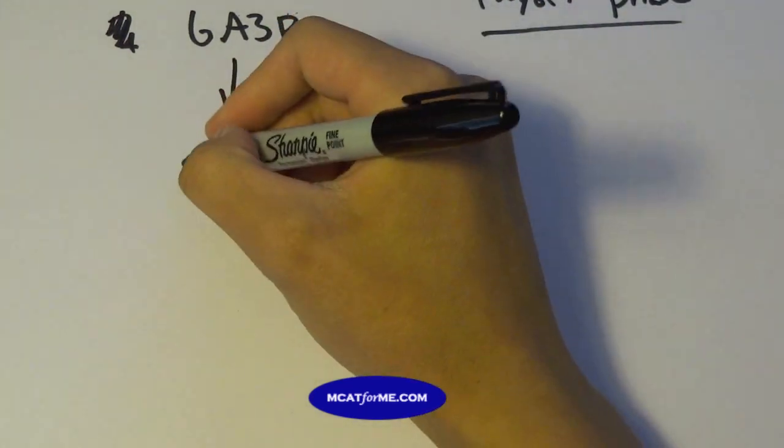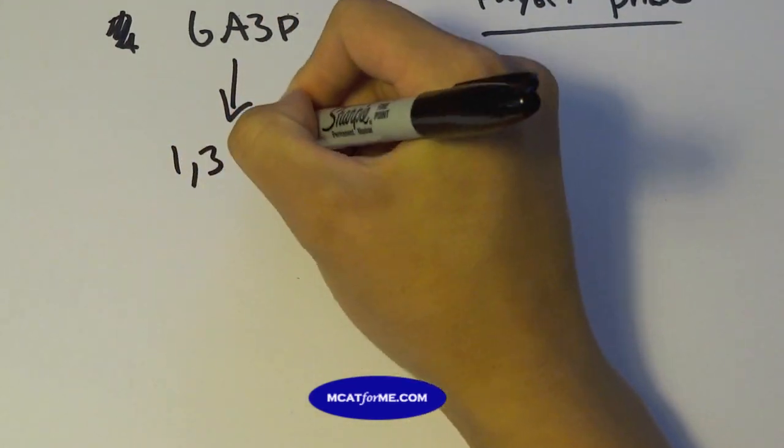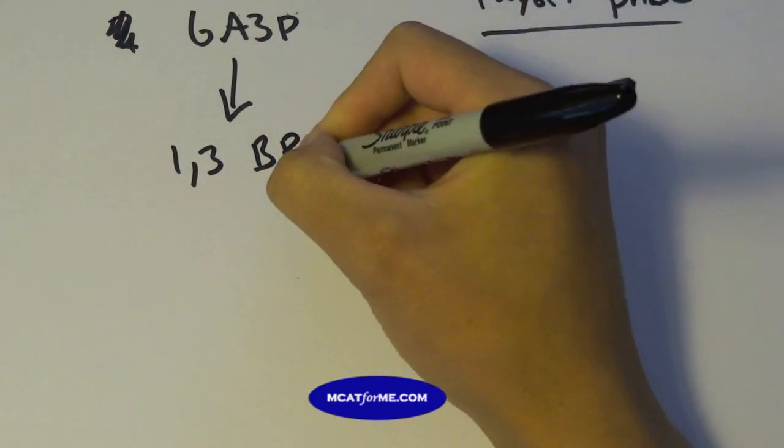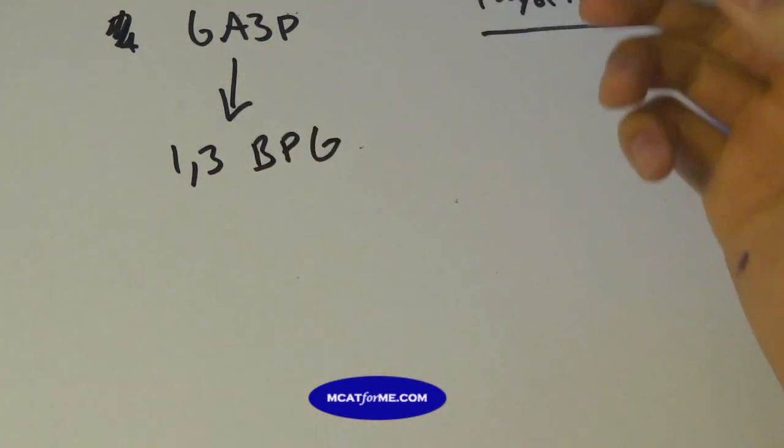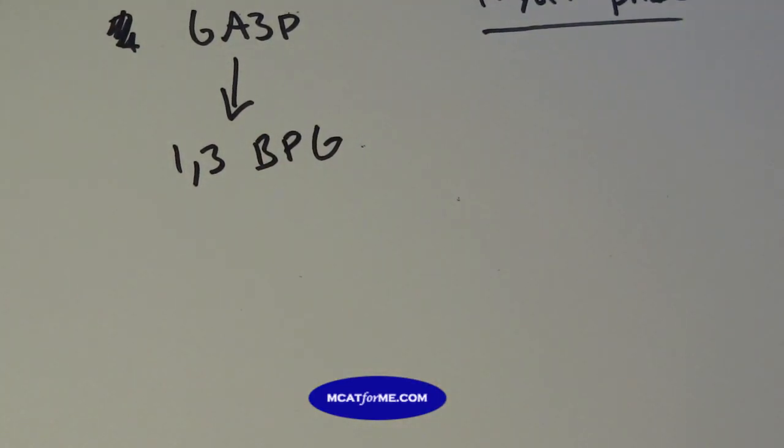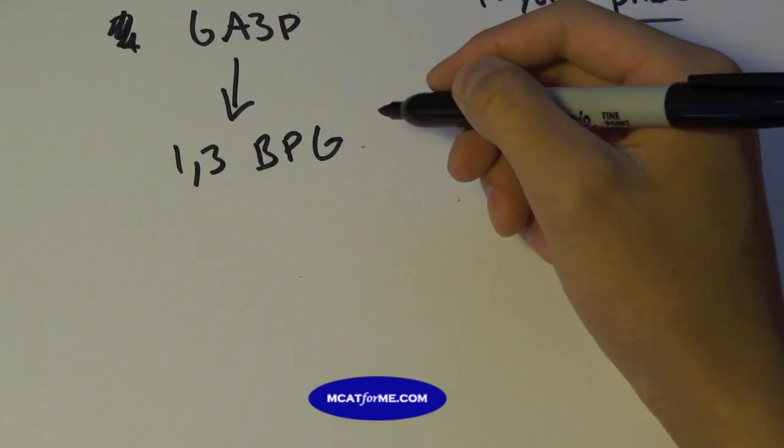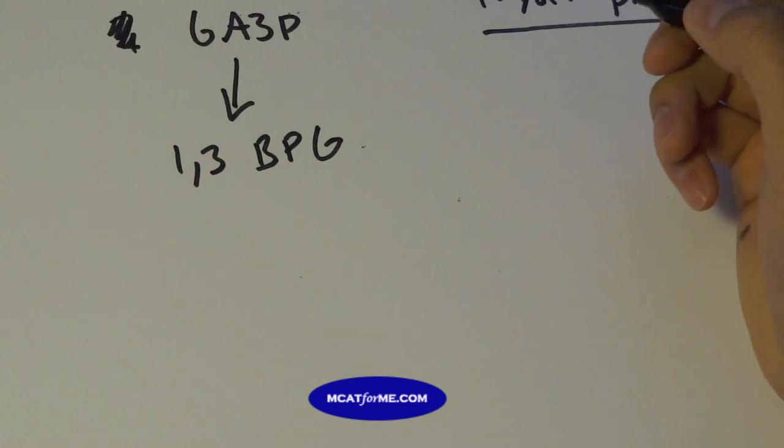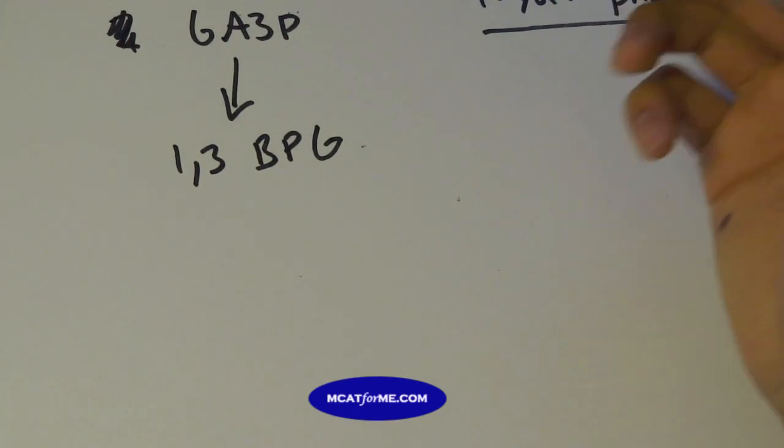So in the GA3P, we're going to get something called 1,3BPG, and this is even higher in energy than ATP. So one time, I've seen them ask before that, what's the highest energy molecule? Is ATP the highest energy conversion molecule? And the answer is no, 1,3BPG is even higher, pyruvate is even higher than that. So if they ever ask you is ATP the highest energy currency, that's not true.